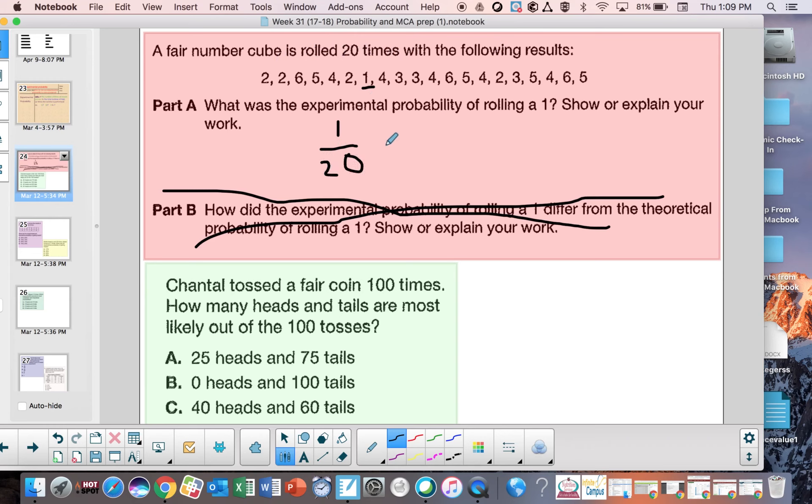So the experimental probability here of getting a 1 is 1 out of 20. Now remember, this could be written as well as a decimal or a percent. If you were to go in your calculator, 1 divided by 20, you would get 5 hundredths, or that would be 5%. You have to remember that probability can be expressed these ways as well.